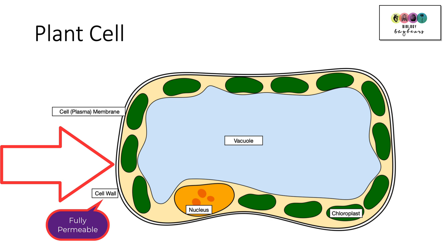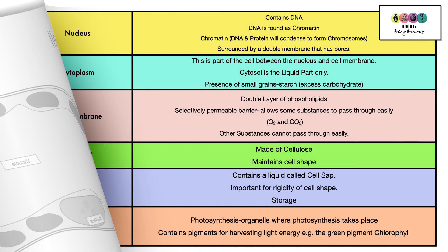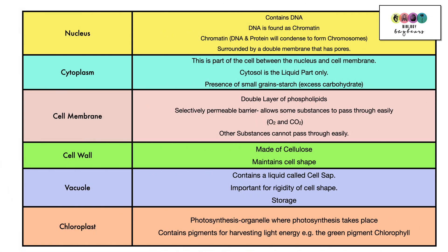So the cell wall, remember, is fully permeable also. So this is the type of diagram that you would be expected to be able to draw or to label. So in addition to the nucleus, the cytoplasm and the cell membrane, we now have a cell wall which is made of that polysaccharide cellulose and it's basically there to give the cell shape. It's also fully permeable so it allows everything to pass through it.